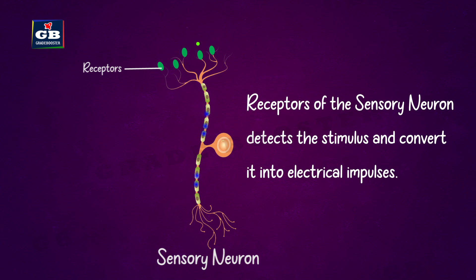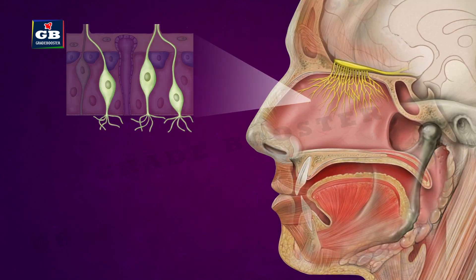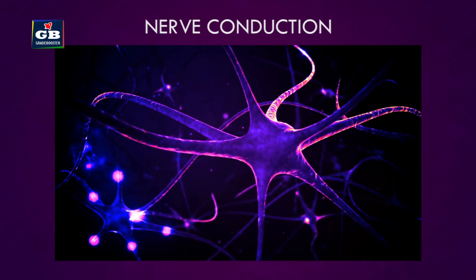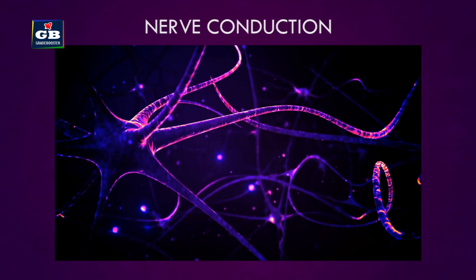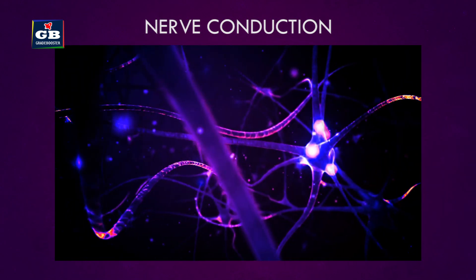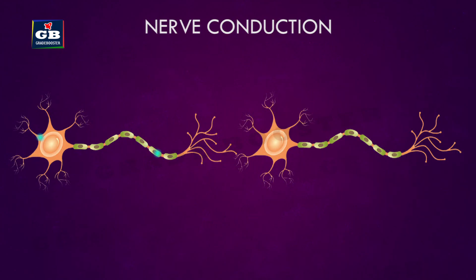Receptors convert stimuli into electrical impulses. The receptors present in the nose are called olfactory receptors — they detect smell. The receptors present in the tongue that help detect taste are called gustatory receptors. Neurons carry information to different parts of the nervous system; this is called nerve conduction.